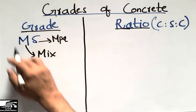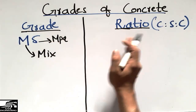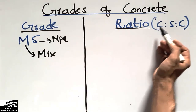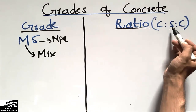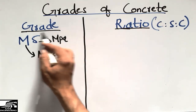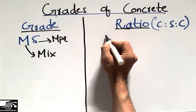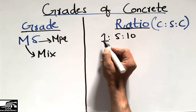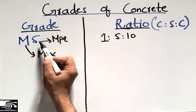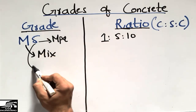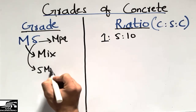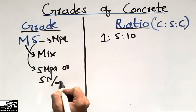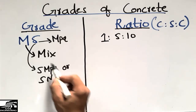Here I will write the grades of concrete and the corresponding ratios. The ratio of cement, sand, and coarse aggregate determines the concrete strength. M5 has a ratio of 1:5:10, and it has a strength of 5 megapascals — or 5 Newtons per millimeter squared, since both units are the same.